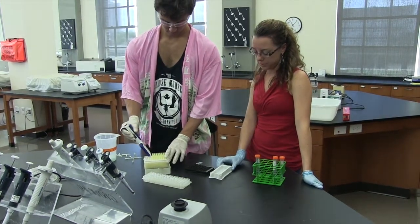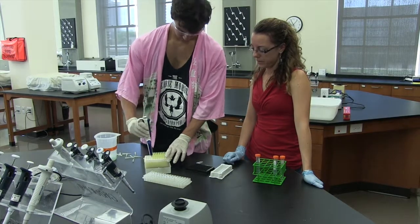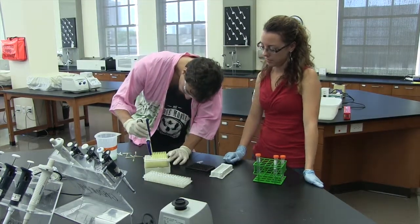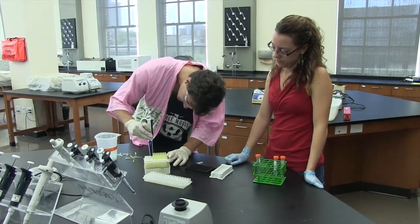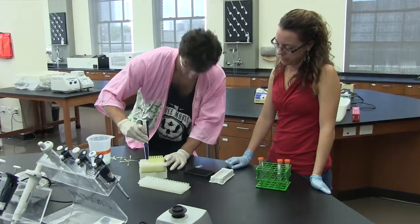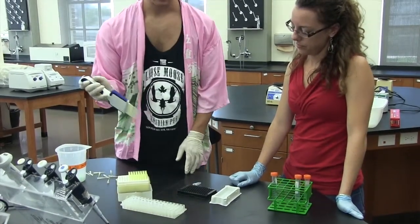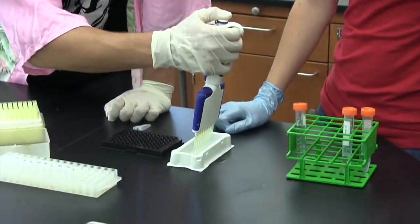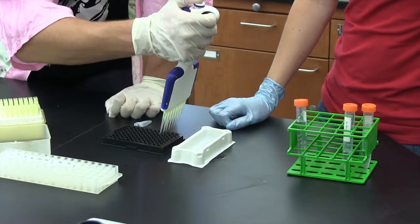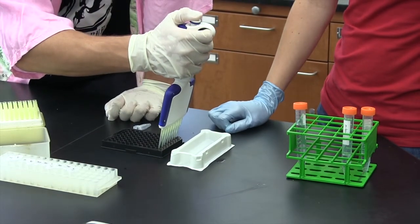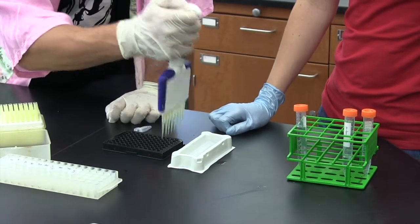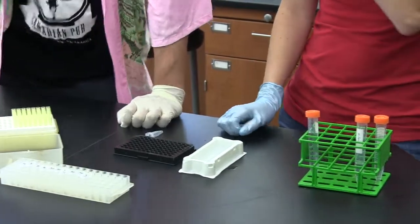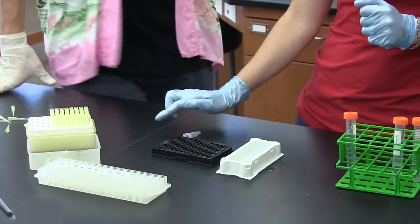So I have the first urea solution in here and I'm going to do the same thing. Just making sure all the tips are on all the way. You've got to push down kind of hard, but not too hard. And then just the same thing, except we're going to be going in columns now with the urea samples. Exactly the same all the way across the plate.